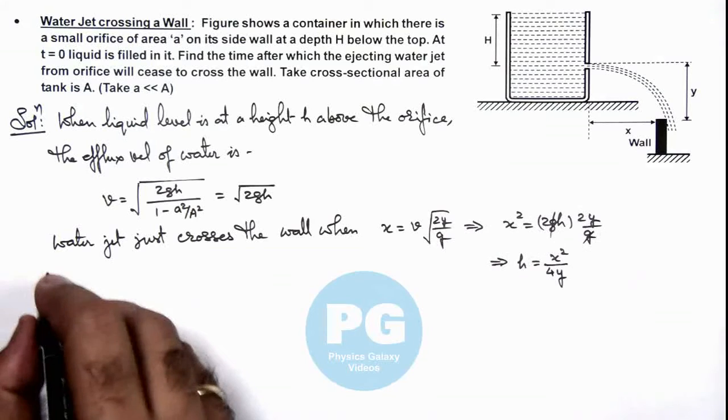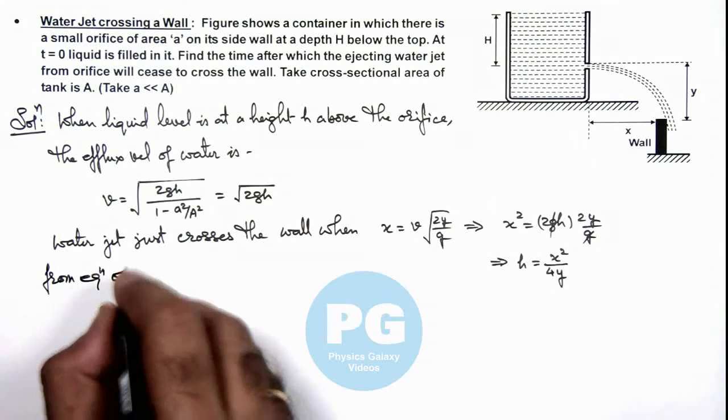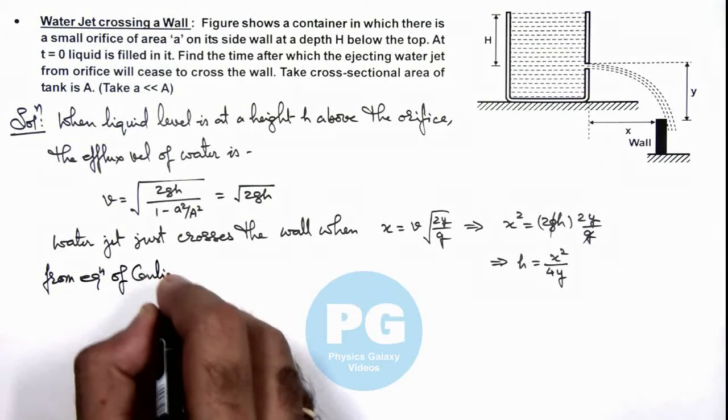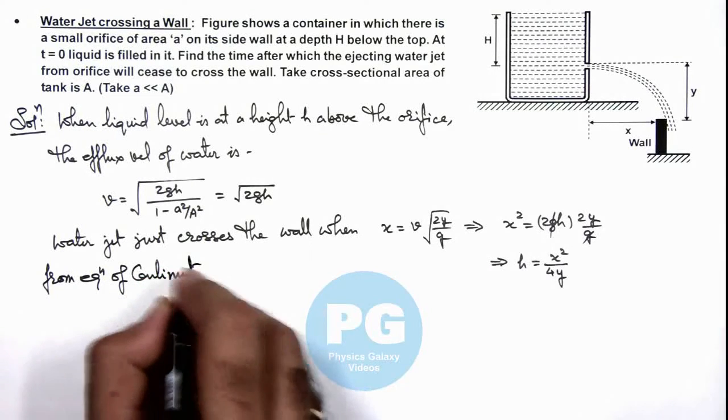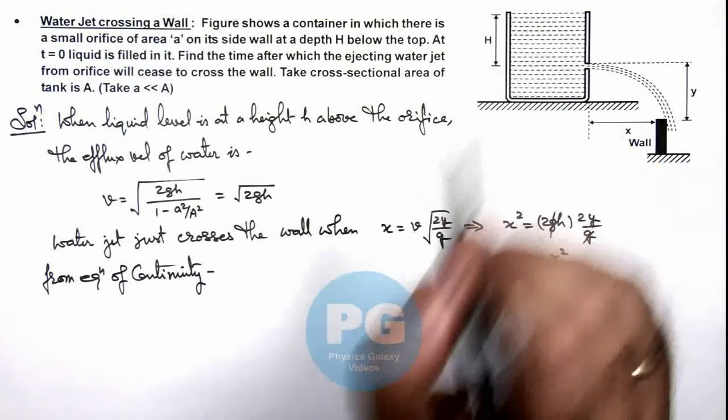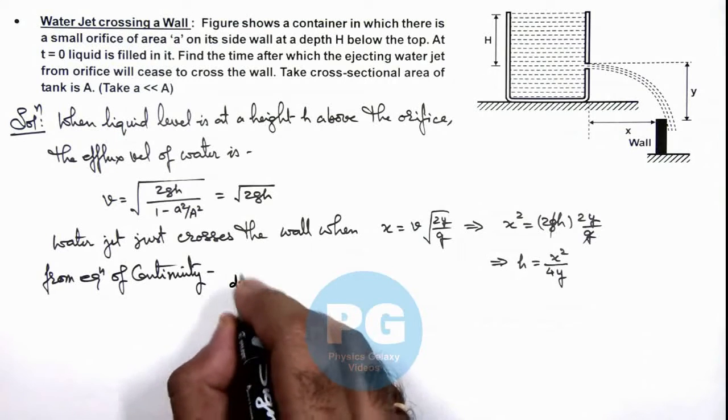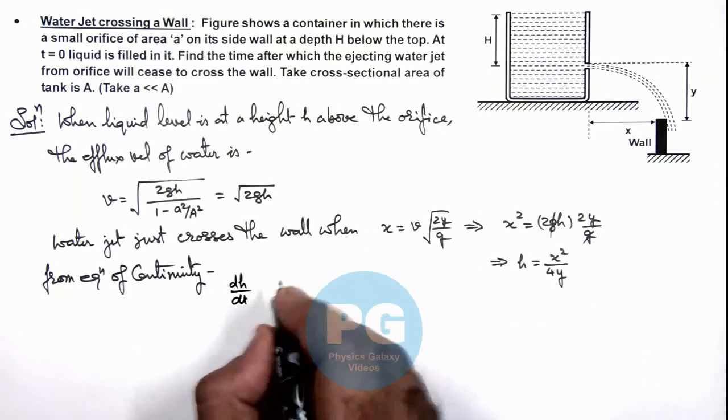So we can use from equation of continuity. Here we can write if the water level is coming down at a rate of dh/dt, we can write dh/dt multiplied by the cross sectional area A_y.